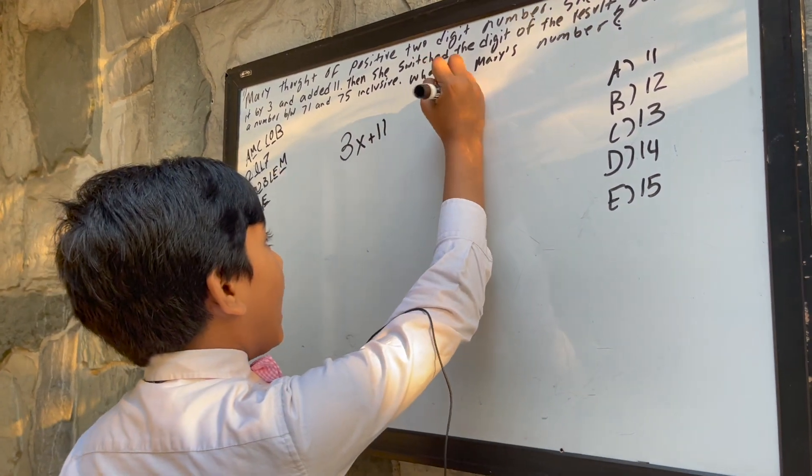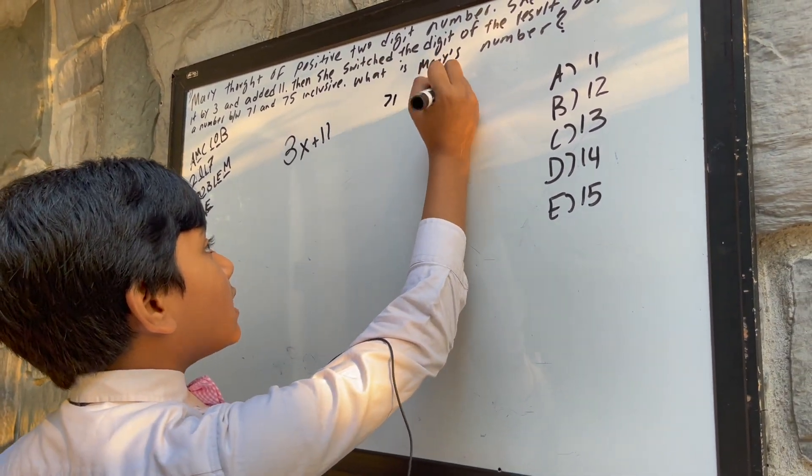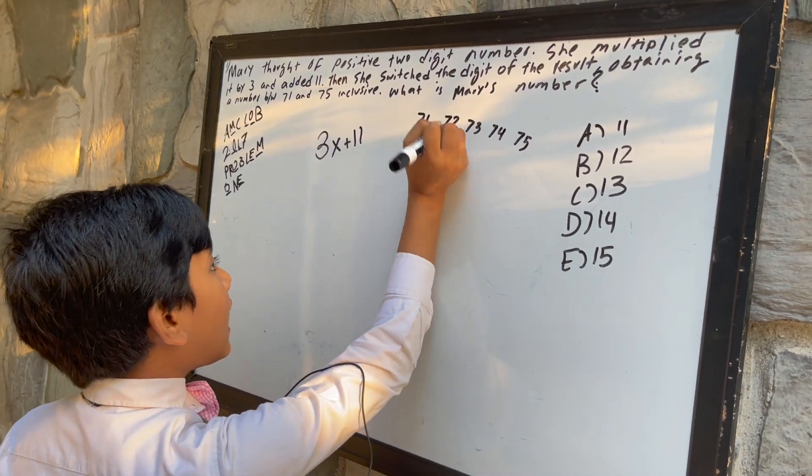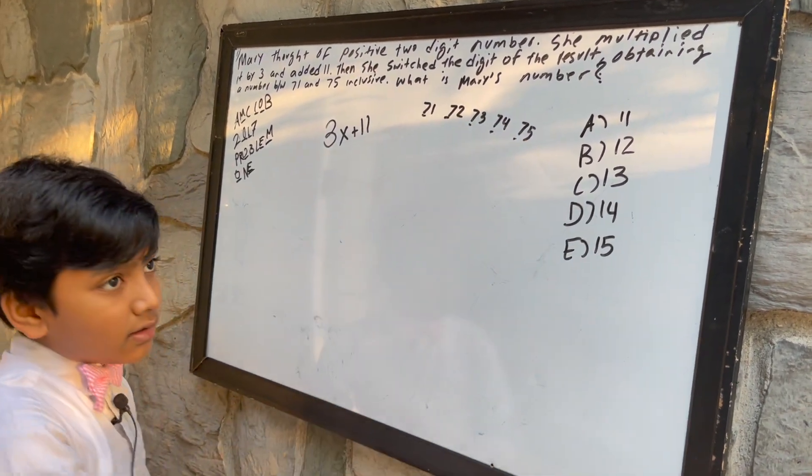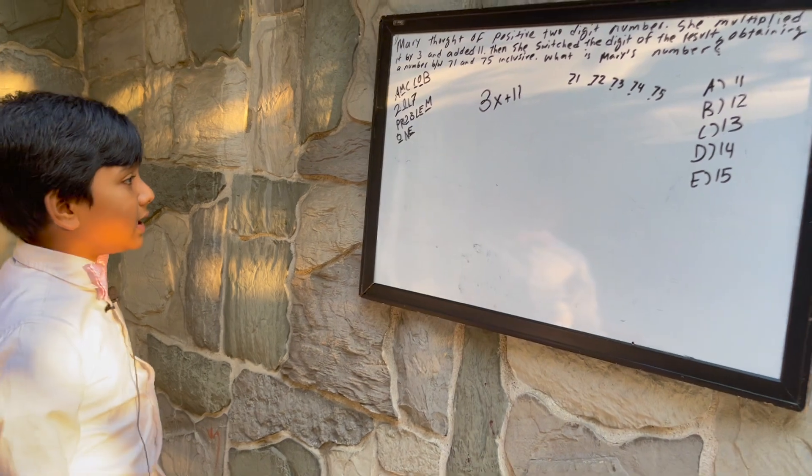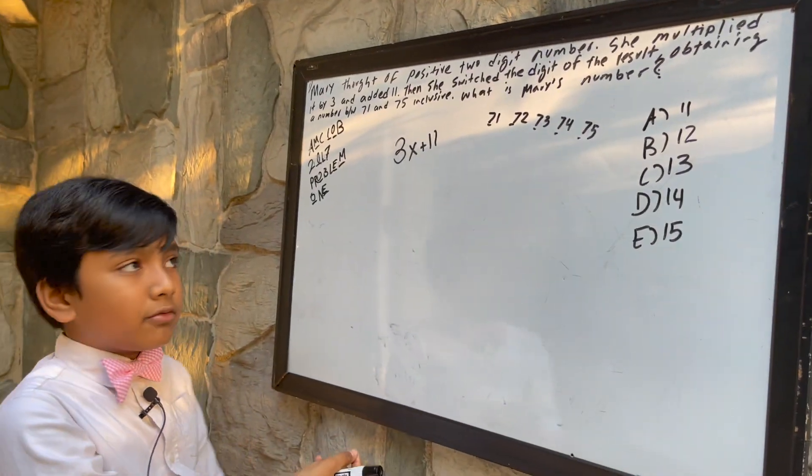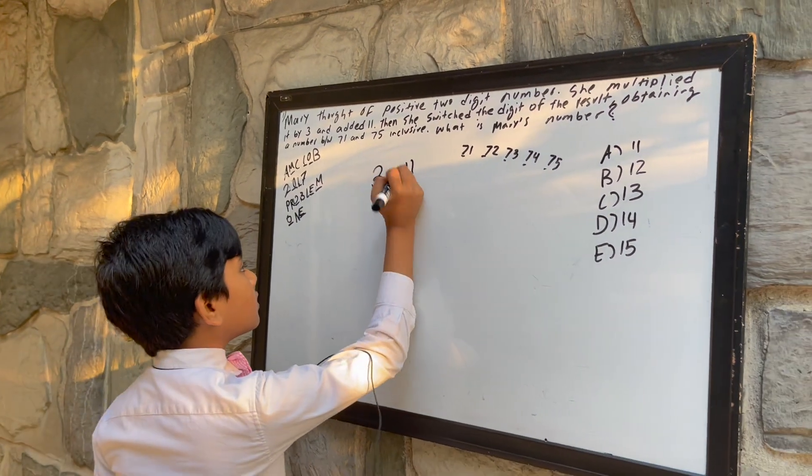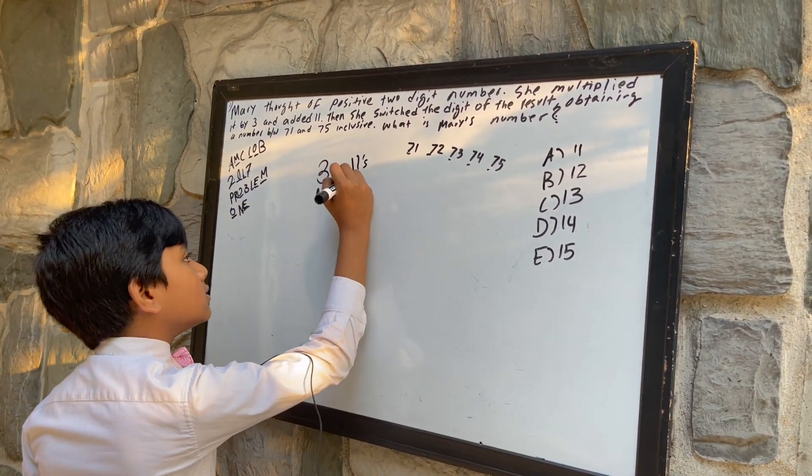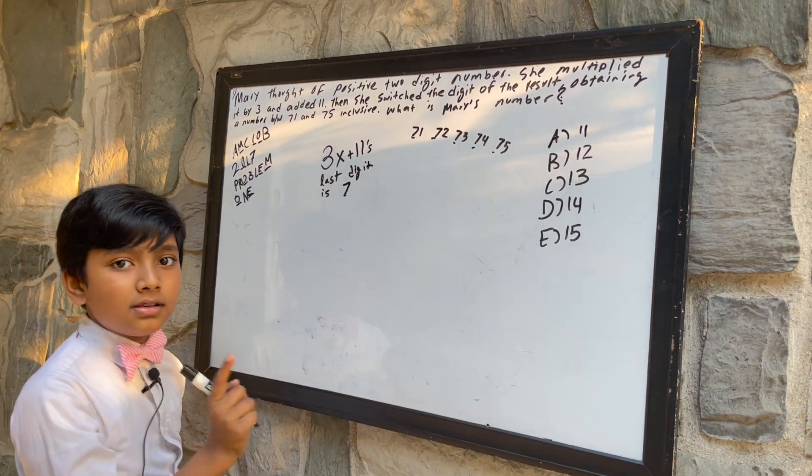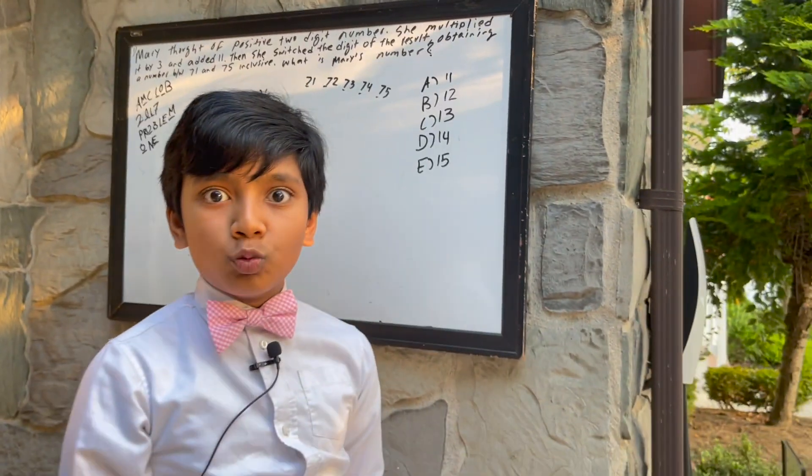So, every number between 71 and 75, you may notice, has the first digit of 7. So that means that the last digit of 3x plus 11, since they get reversed, must be 7. So that means that the last digit is 7, but the thing is, there's more.